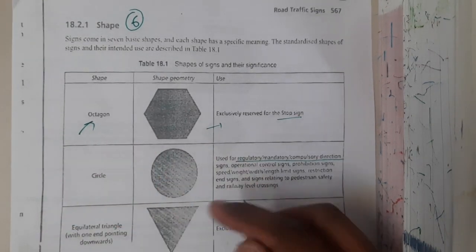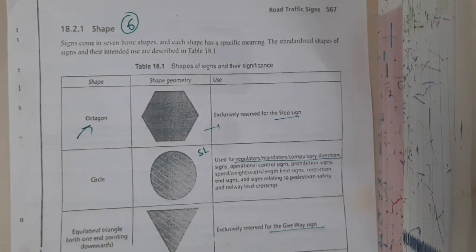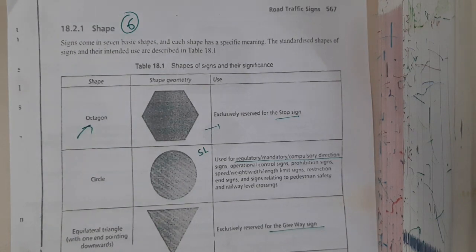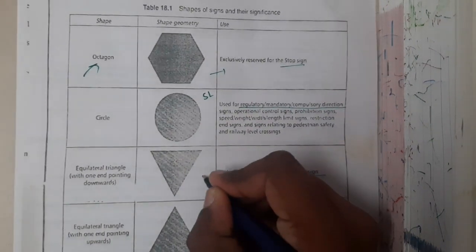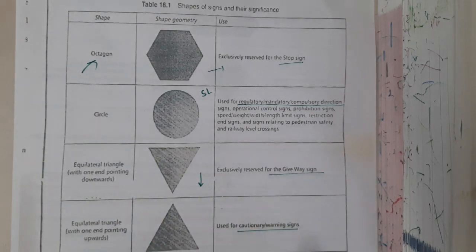Circles could be the speed limit as well as the no entry boards, no parking, and all those things. The triangle which is a downside, that is nothing but with one endpoint downwards, this is only for give way. I think I told you that both of these and this can be used in the warning signs, but no, sorry for that.